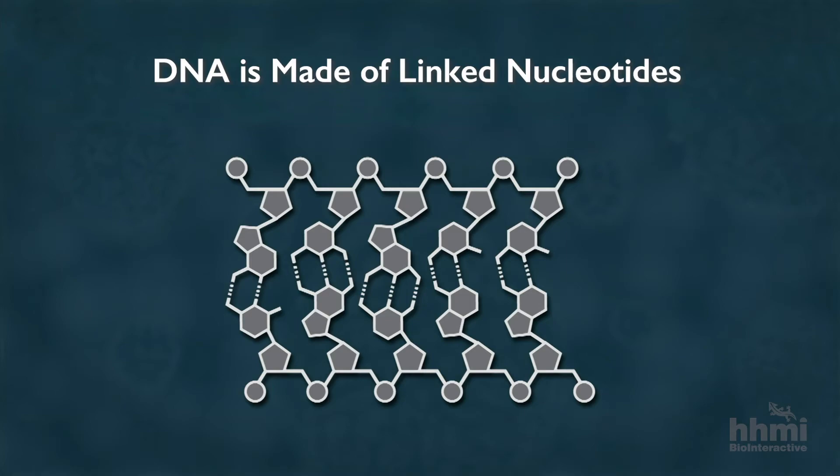The nucleotides are linked together. They are linked one way on one strand and in the opposite way on the other strand. Because the strands are arranged in opposite but parallel ways, they are called anti-parallel.